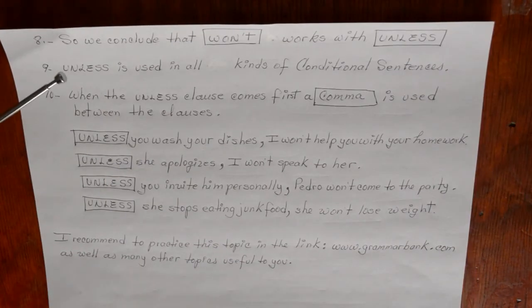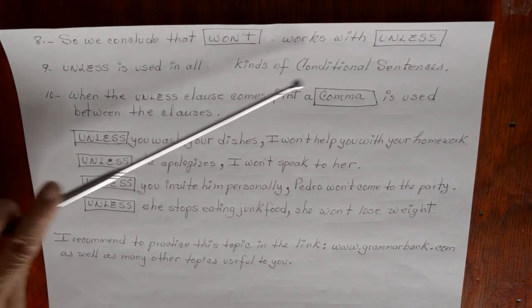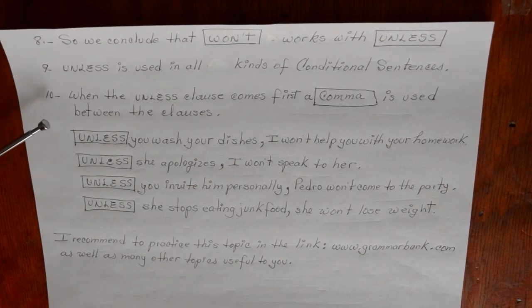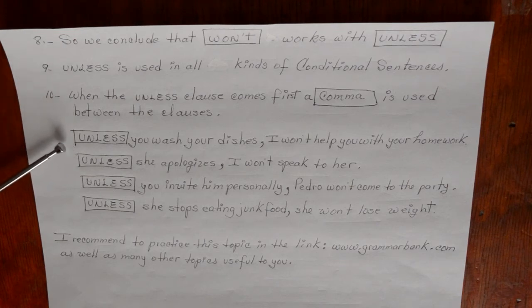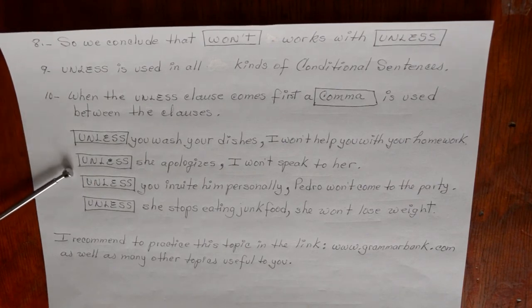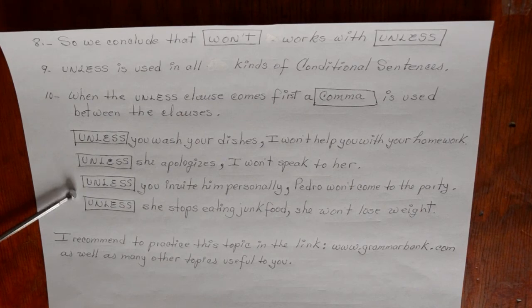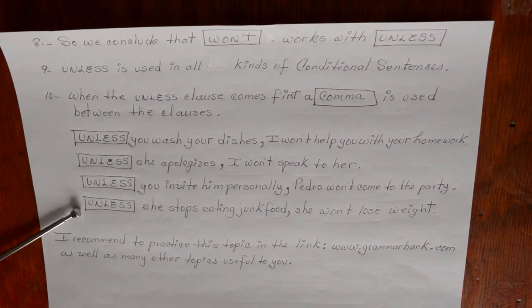We conclude that 'won't' in negative form works with 'unless'. 'Unless' is used in all kinds of conditional sentences. When the 'unless' clause comes first, a comma is used between the clauses. For example: 'Unless you wash your dishes, I won't help you with your homework.' 'Unless she apologizes, I won't speak to her.' 'Unless you invite him personally, Pedro won't come to the party.' 'Unless she stops eating junk food, she won't lose weight.'